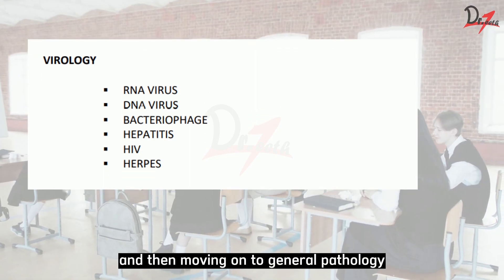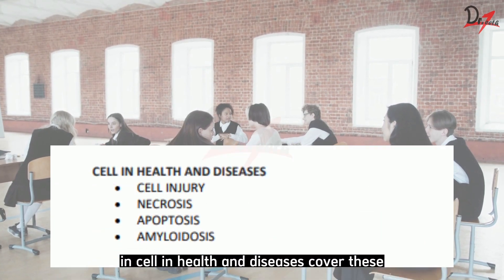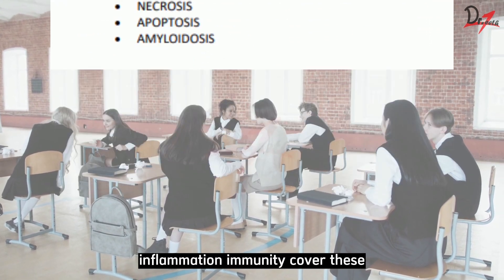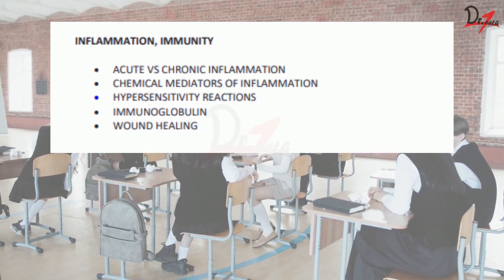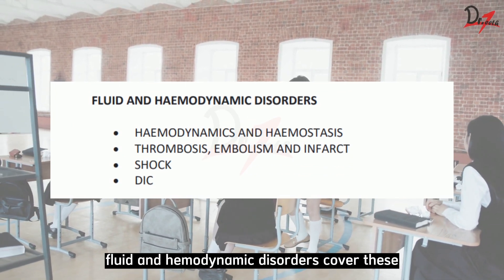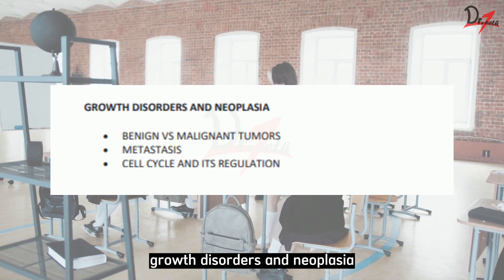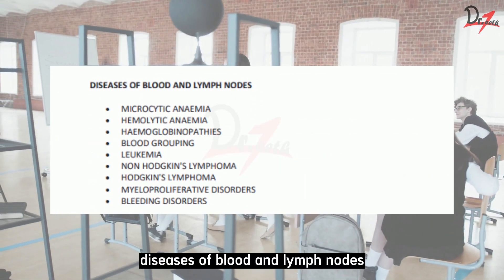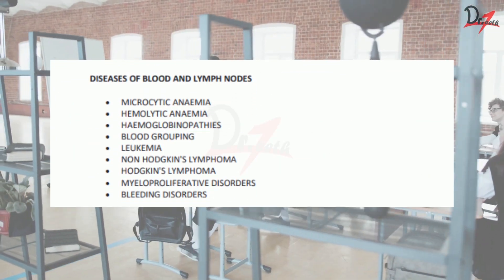Moving on to General Pathology — in Cell in Health and Diseases, cover these topics. For Inflammation and Immunity, cover these. For Fluid and Hemodynamic Disorders, cover these. For Growth Disorders and Neoplasia, cover these. And finally, cover the topics on Diseases of Blood and Lymph Nodes.